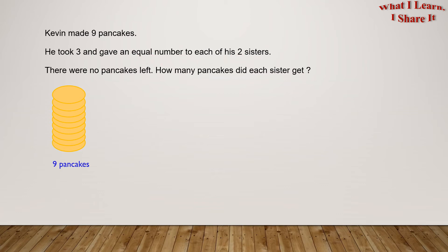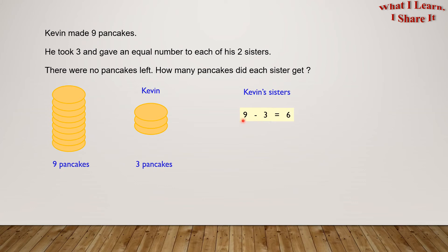So let's do it! Here are Kevin's 3 pancakes. So how many will his sisters get? Let's find out how many pancakes are remaining. The remaining pancakes were 9 minus 3 equals 6.